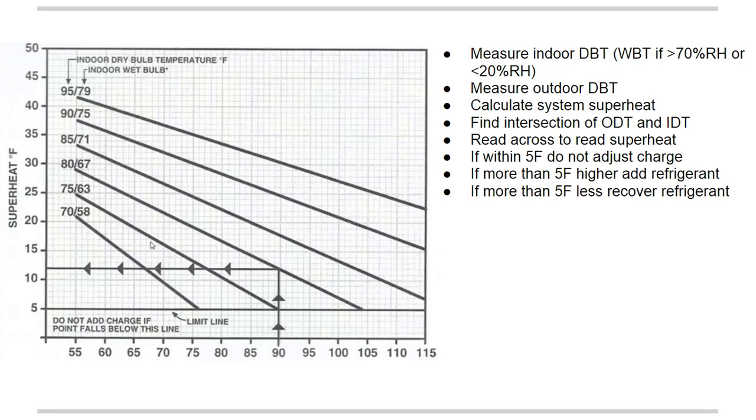If it's more than 5 degrees Fahrenheit less than what you recorded on the chart, so your measured superheat is less than 12 degrees Fahrenheit, then you are going to recover refrigerant. After you either add or recover refrigerant, you need to allow the system to stabilize for 15 minutes before you recheck the superheat, and then check it against the chart. You will continue to do this until you get within plus or minus 5 degrees of the superheat as recommended by the manufacturer, and again in this instance it is 12 degrees Fahrenheit.